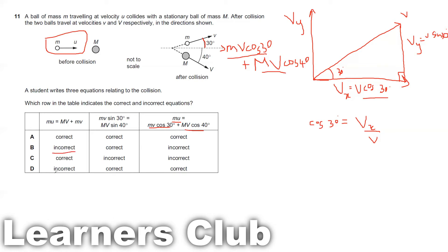We already confirmed the first equation is incorrect, and now this horizontal equation is correct. From here, the answer must be D. They have also resolved vertically: since one side is away from 30 degrees, that component is MV sin 30, and since the other is away from 40 degrees, that is MV sin 40, giving the upward moment equal to the downward moment. So the answer for Question 11 is option D.